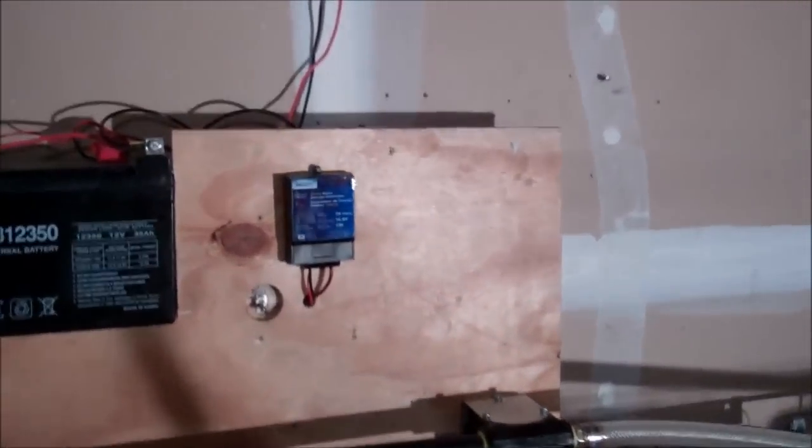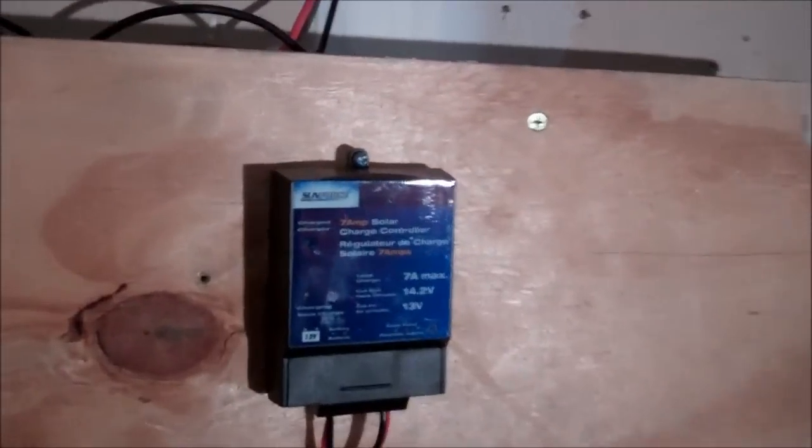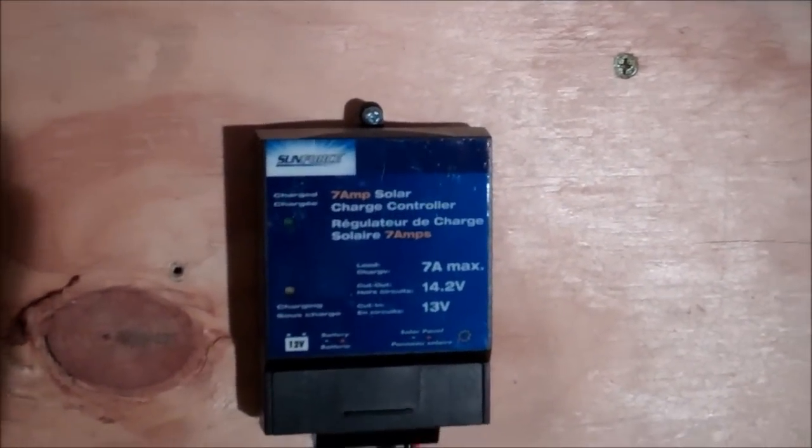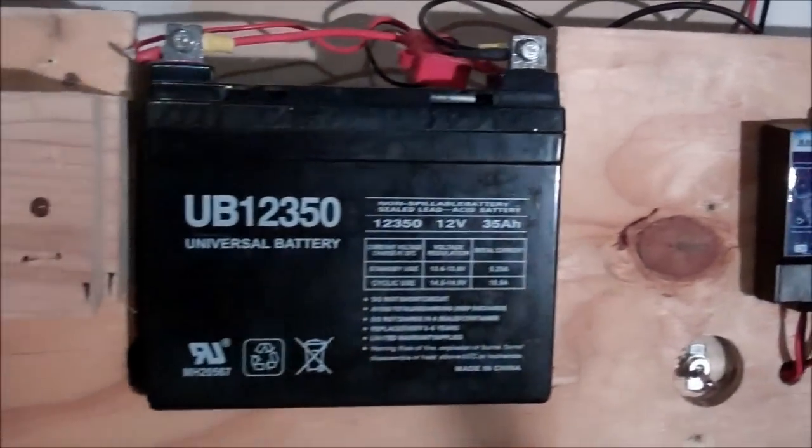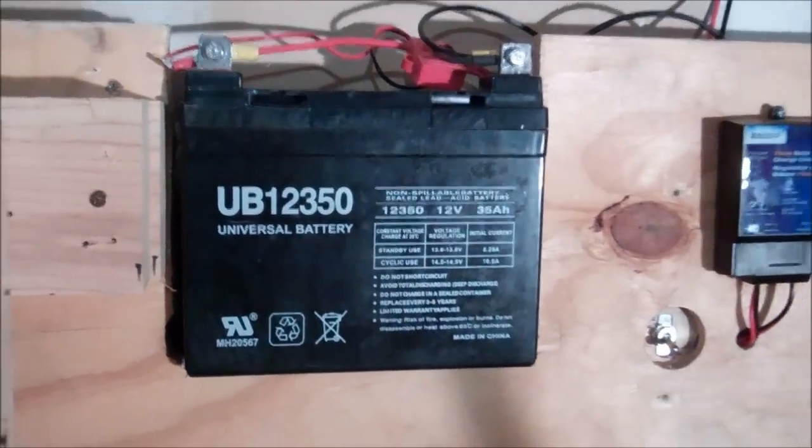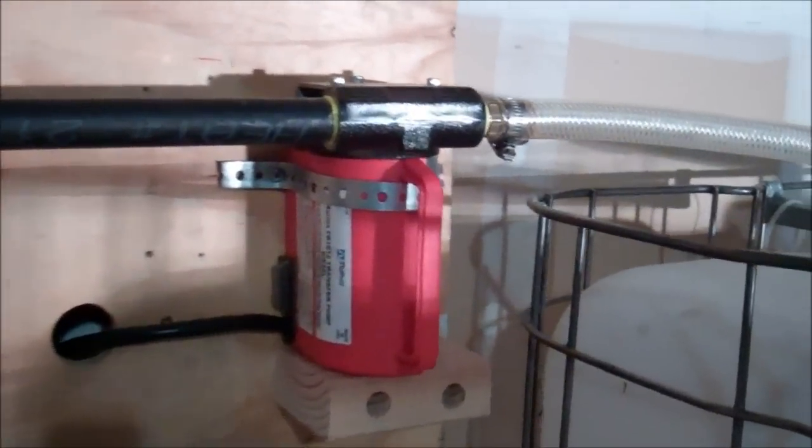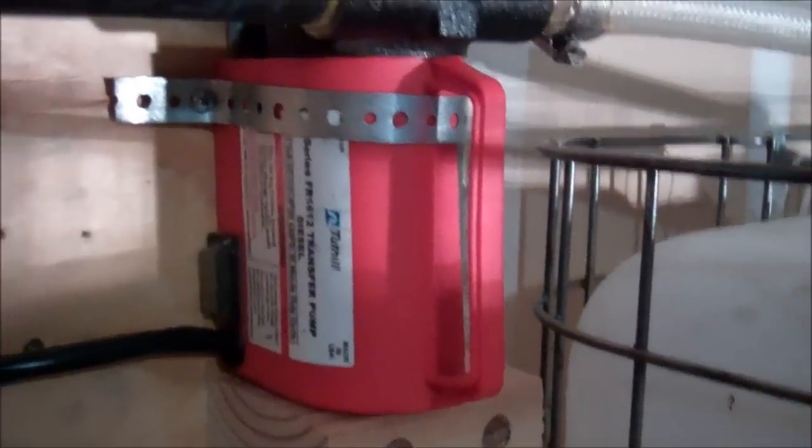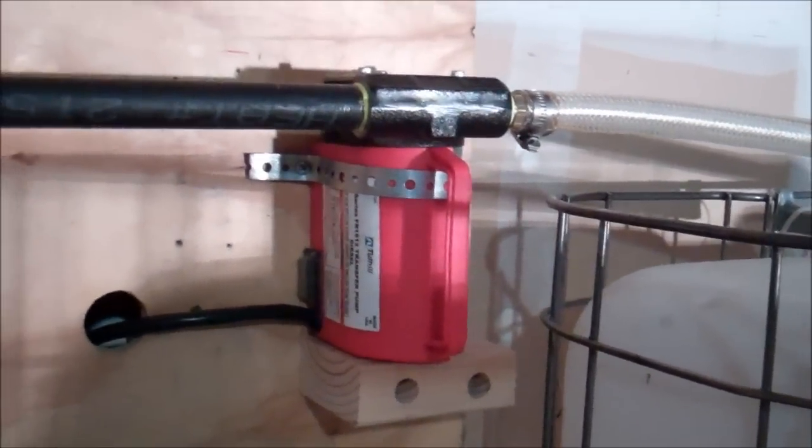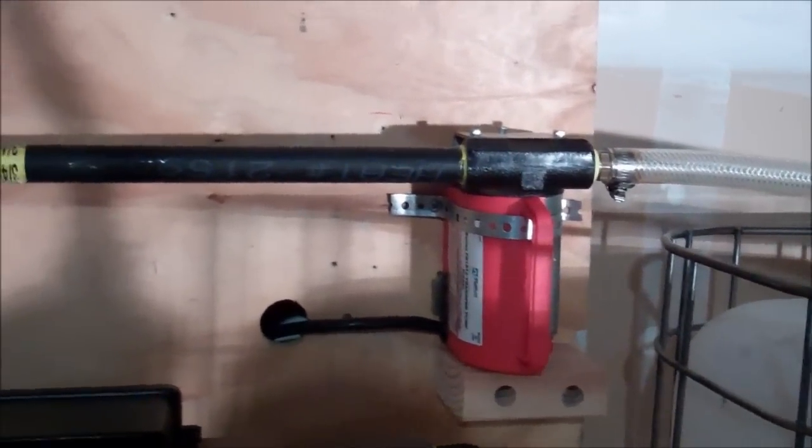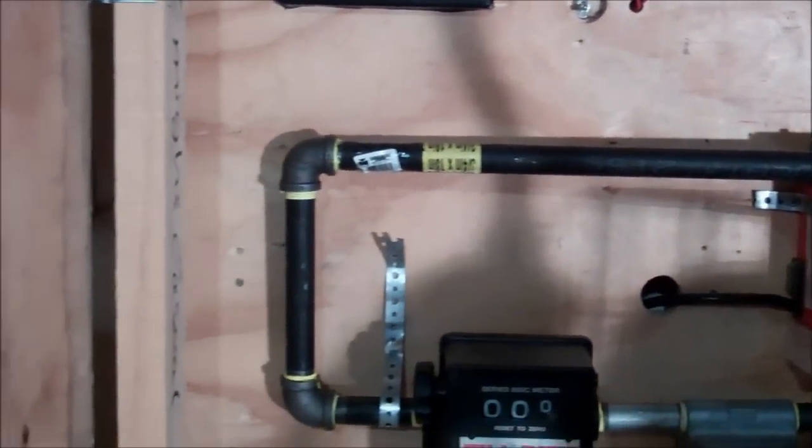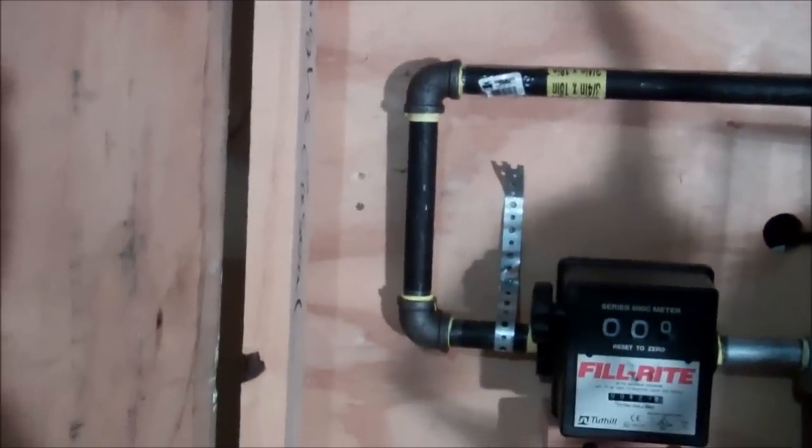It's connected to the battery controller and then that's hooked up to that long cycle battery there. The pump we chose was a 12 volt DC pump. It runs really well. It's kind of loud, but not too loud. Then our piping is just regular 3 quarter inch black pipe.